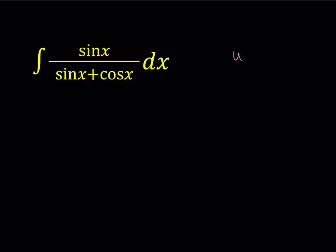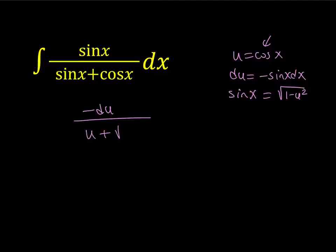How about we say u equals cosine x, then from here we're going to get du equals negative sine x dx. So we kind of got the sine x dx there, so that would be negative du, and at the bottom you have sine x plus cosine x. u is cosine x, but what is sine x? Well, sine x you could probably write it as the square root of 1 minus u squared. And then you're going to get u plus the square root of 1 minus u squared. Is this easy to integrate? You could probably multiply and divide by the conjugate u squared minus 1 minus u squared. The u squared is not going to cancel out, so that's not really going to give us something nice.